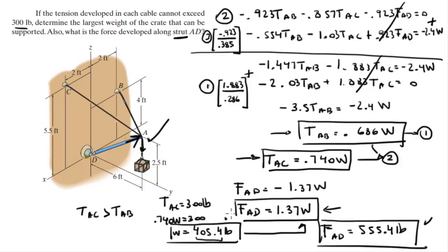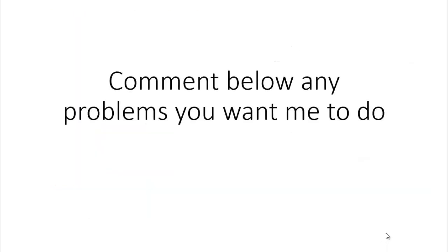So the final answer is W = 405.4 lb and F_AD = 555.4 lb. One thought: if no cable can exceed 300 pounds, you might also want to check the hanging cable, but the problem doesn't require it. Remember, F_AD came out negative because we assumed it acted downward, but it actually acts upward. Please comment below if you'd like me to do any other problems!